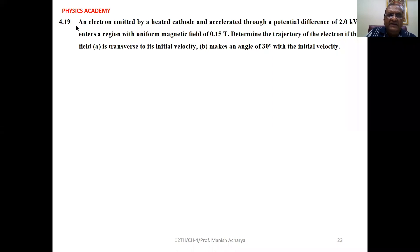Problem 4.19: An electron emitted by a heated cathode and accelerated through a potential difference of 2 kV enters a region with uniform magnetic field of 0.15 Tesla. Determine the trajectory of the electron if the field (a) is transverse to its initial velocity, (b) makes an angle of 30 degrees with the initial velocity.